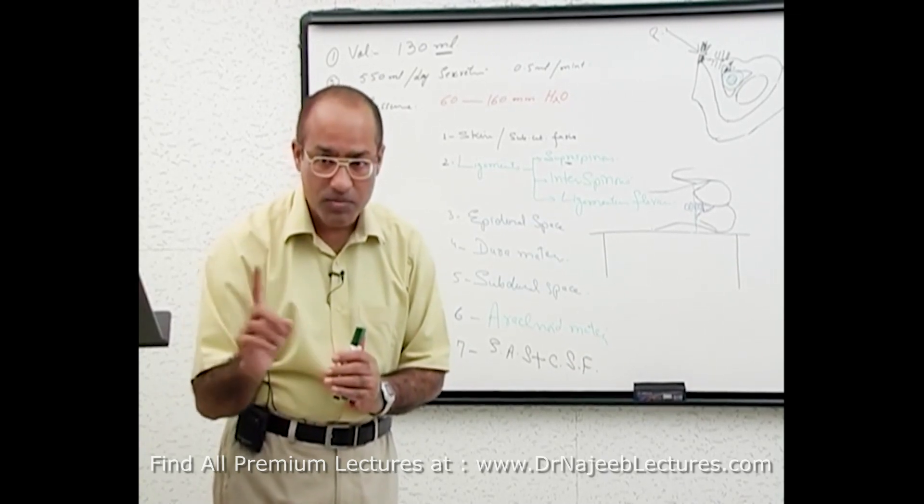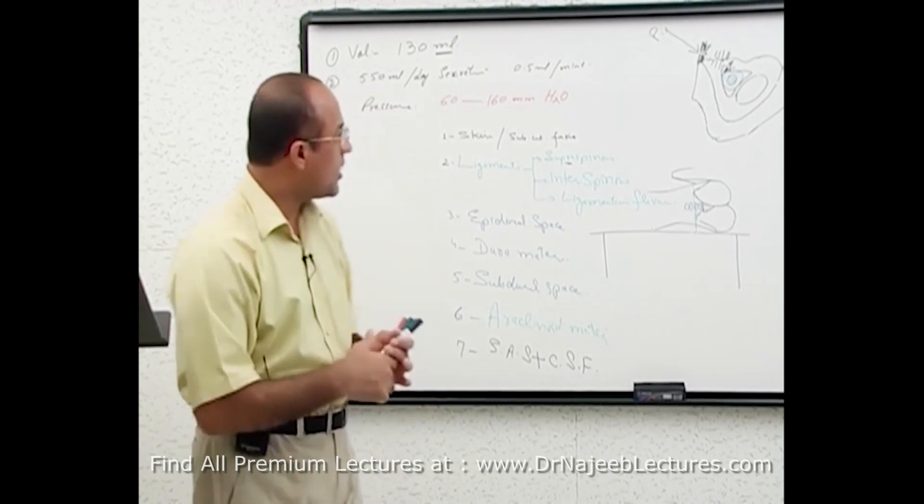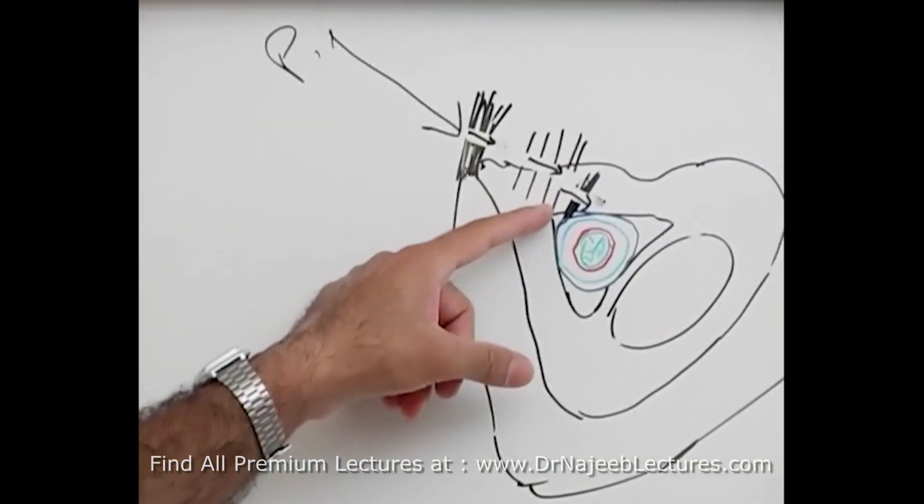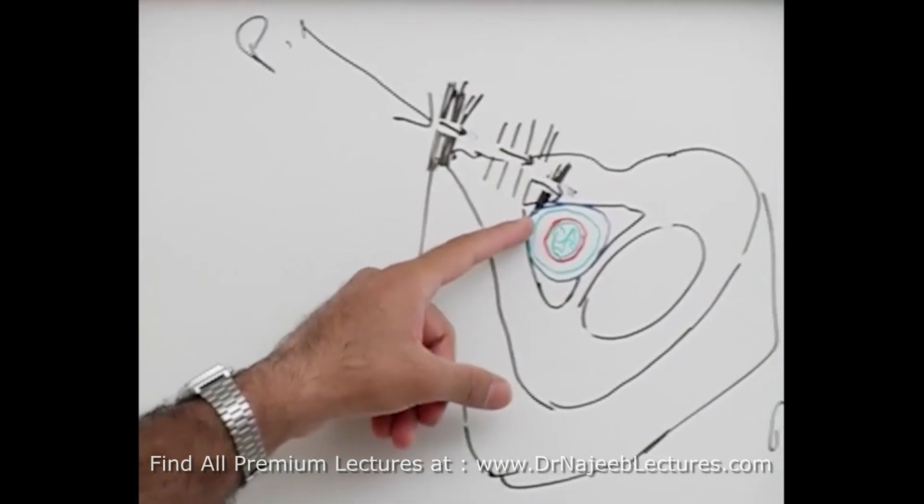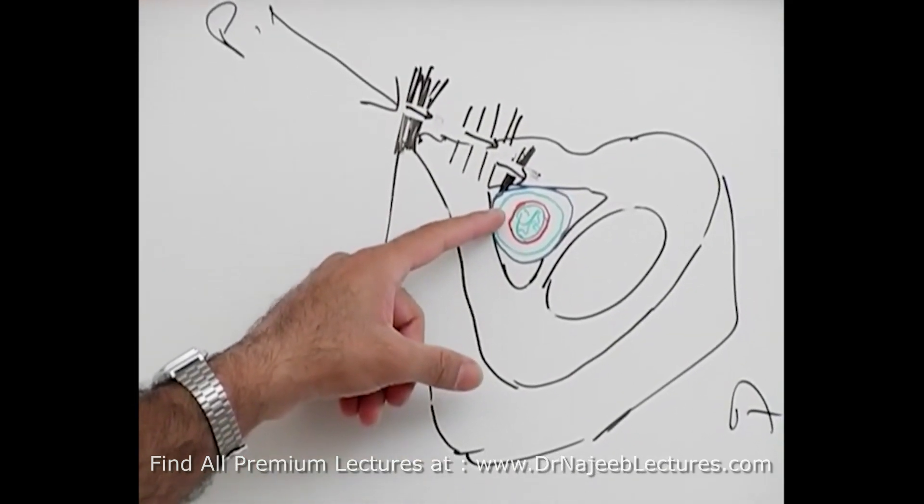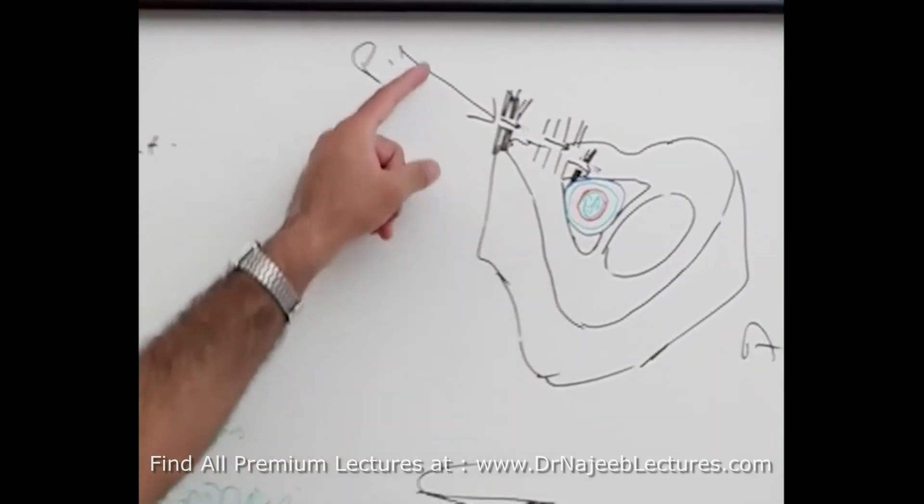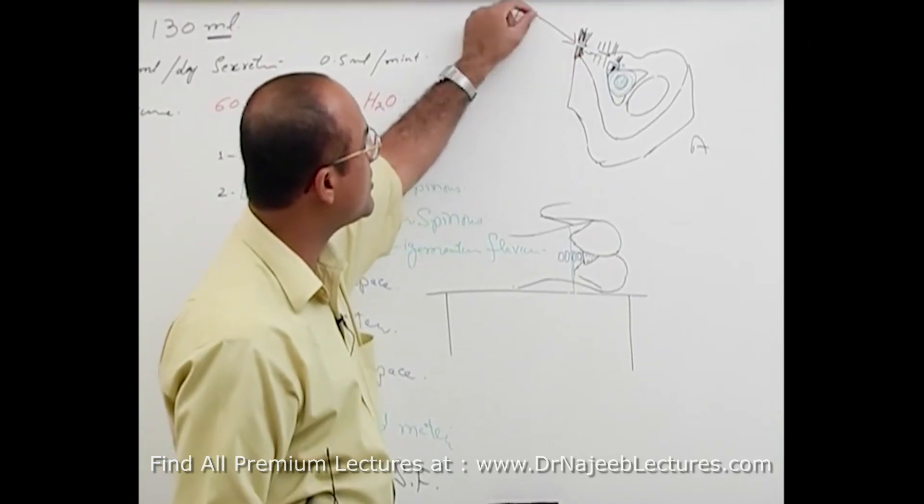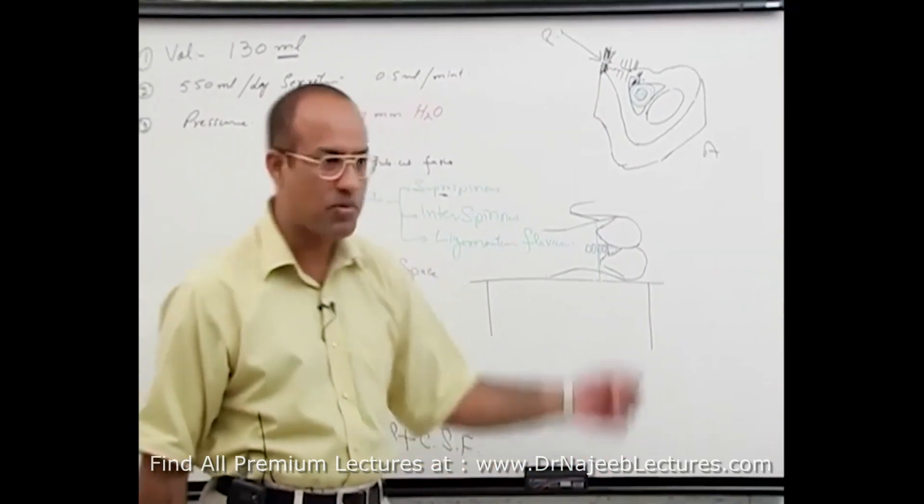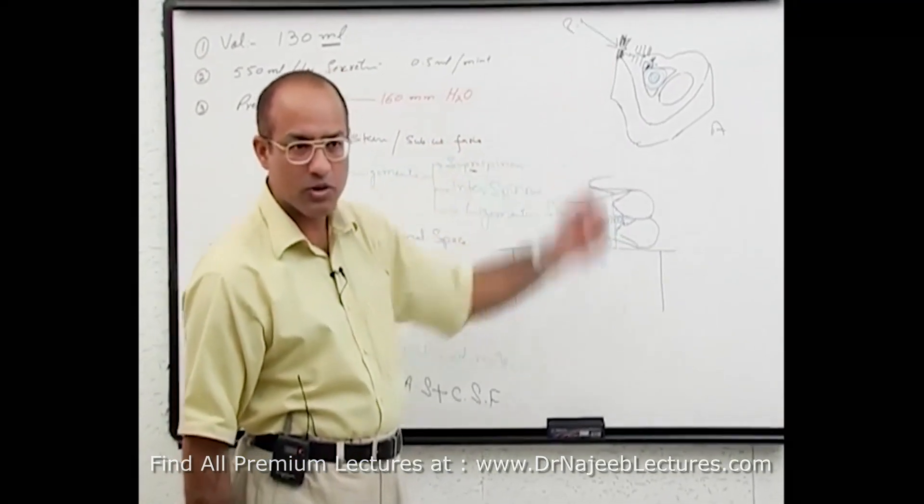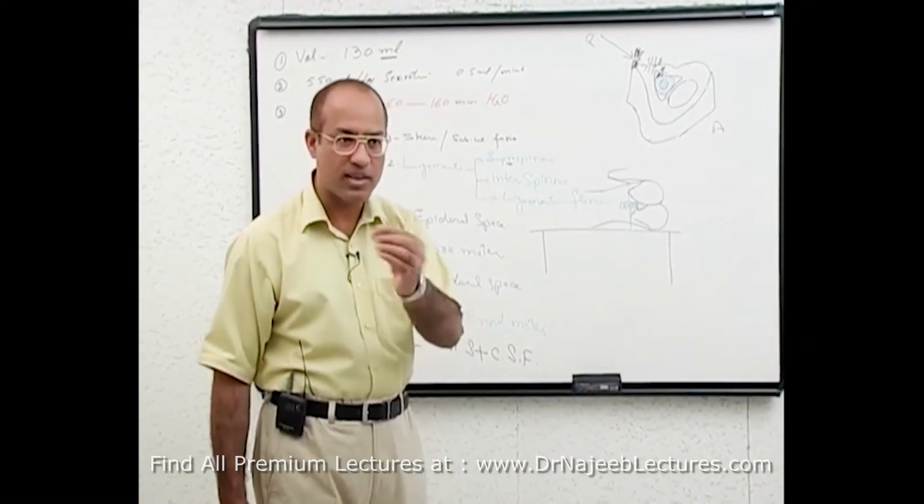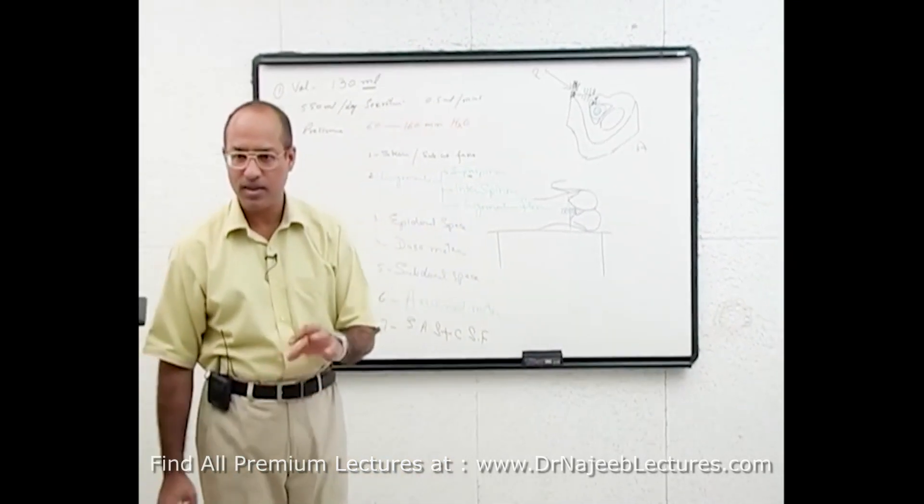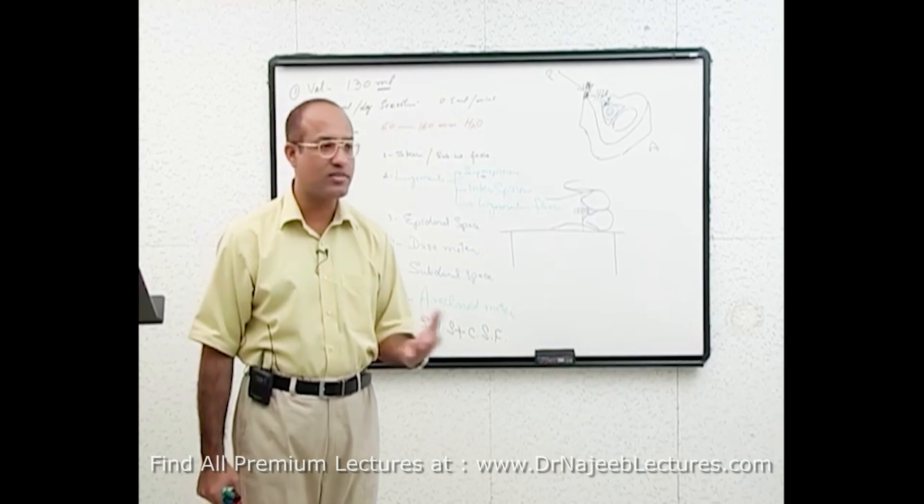So pia is not pierced. So actually when you are pushing your needle initially you feel the resistance of the ligaments. Then you feel another resistance of dura mater. After that you are in subarachnoid space. Then what you do? From the needle you remove stylet and drops of CSF will start coming out. And if you attach the manometer with that you will know what is the pressure. And then you will take the samples of CSF in different bottles. Of course sterile and clean. For chemical analysis and other purposes.